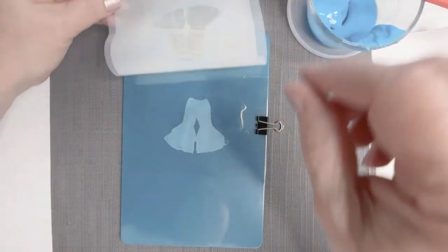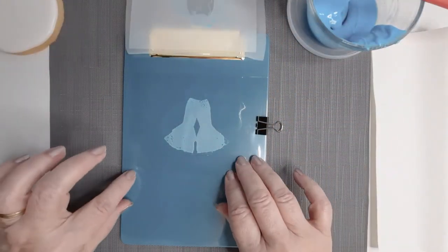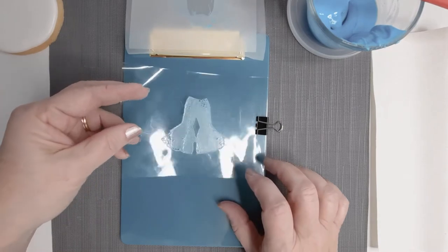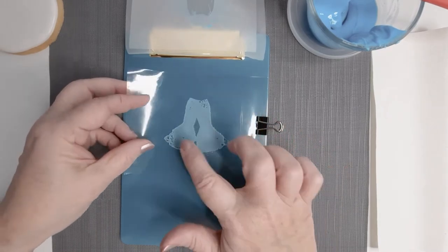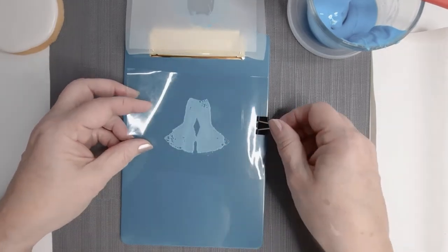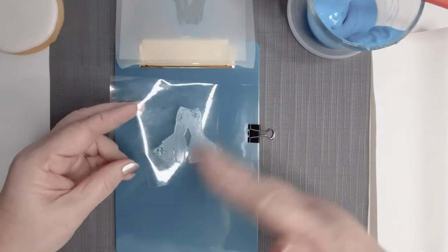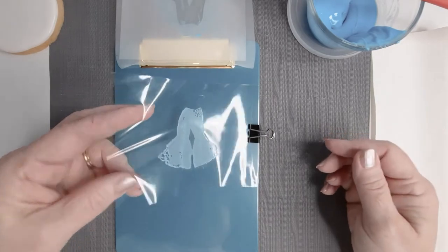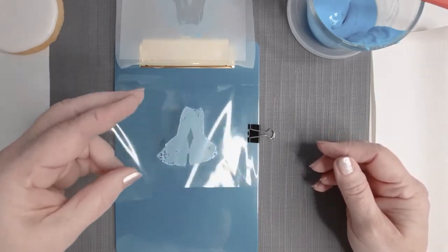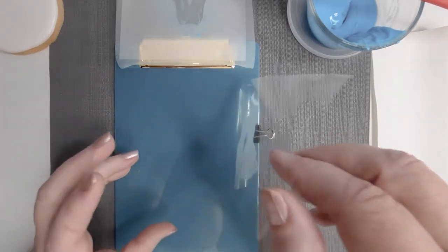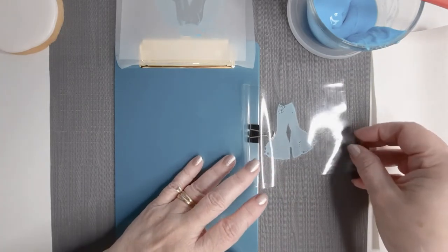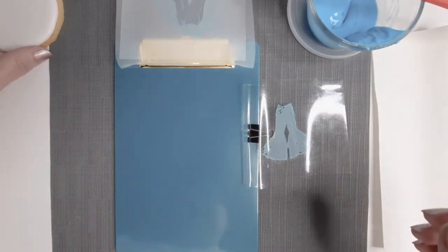So then you pull it up, and this will give you your template. And it doesn't have to be perfect. It's just a matter of lining it up on your cookie for the next one. So you keep this clipped on here, and let it dry so you don't smear it around. And it dries really quite quickly.